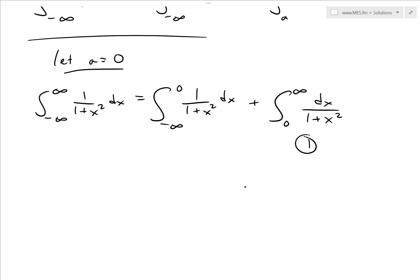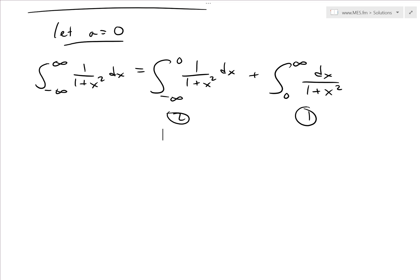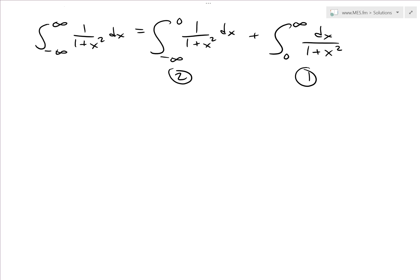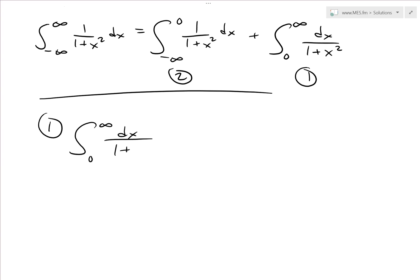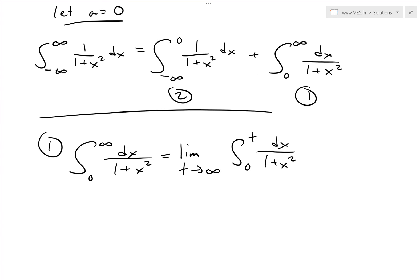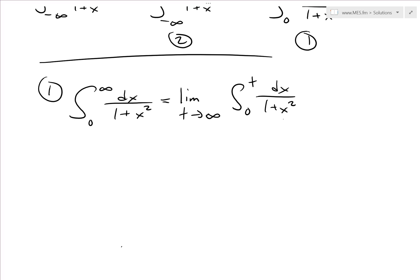Let's look at the zero-to-infinity part first, since it's easier to think about. We can write this as a limit of a definite integral: the limit as t approaches infinity of the integral from zero to t of 1 over 1 plus x squared dx. This is the standard approach for infinite intervals shown in my earlier video.